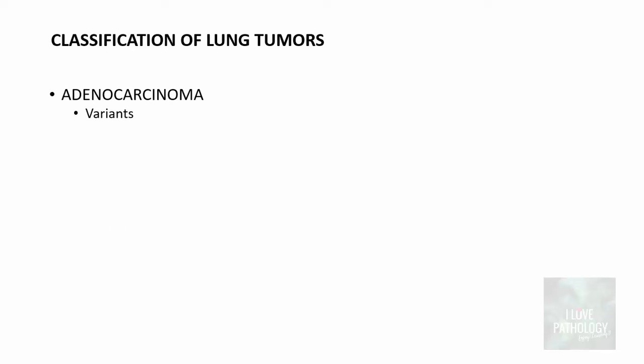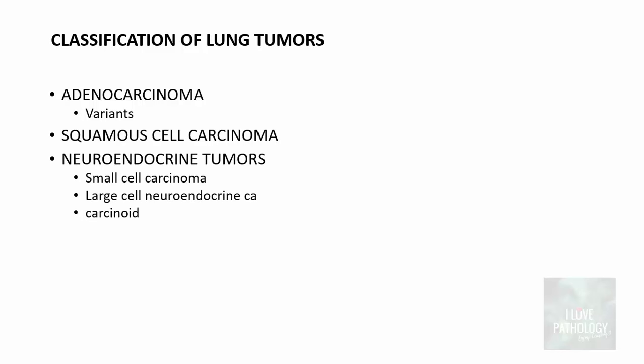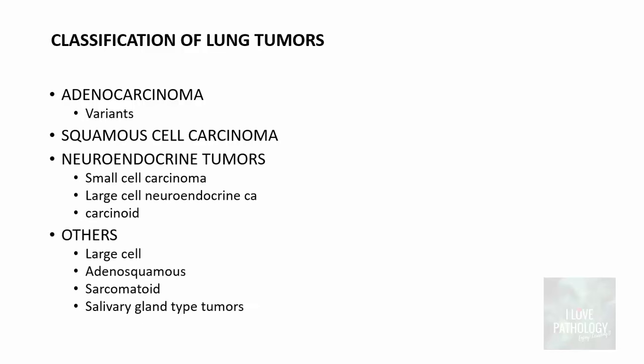I also covered the classification, which included adenocarcinoma, squamous cell carcinoma, neuroendocrine tumors, and other carcinomas like large cell, adenosquamous, sarcomatoid, and salivary gland type tumors. In this part we will understand in detail about these major types of lung cancers.